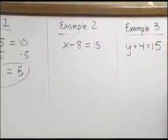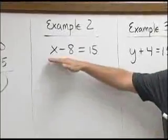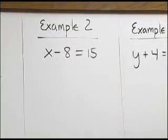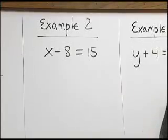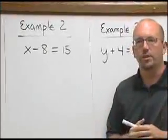Looking at example number 2 here. Example number 2 gives us a subtraction from the variable. So, from my variable x, I'm subtracting 8. To undo subtraction, we simply use addition.